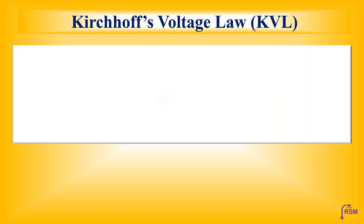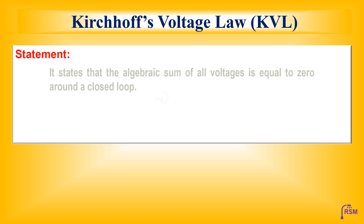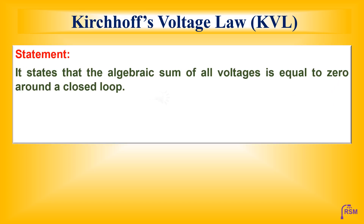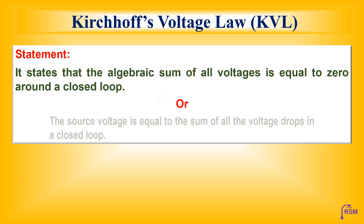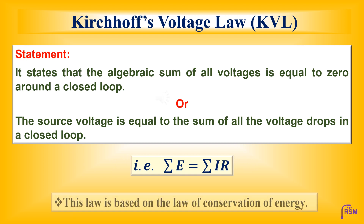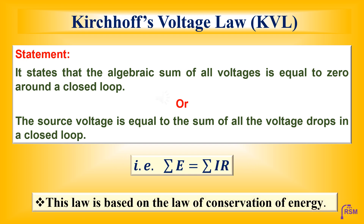Kirchhoff's voltage law states that the algebraic sum of all voltages is equal to zero around a closed loop. Or it can also be stated as the source voltage is equal to the sum of all the voltage drops in a closed loop. This law is based on the law of conservation of energy.